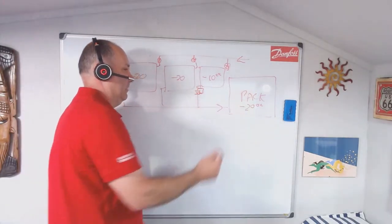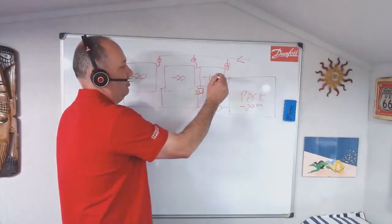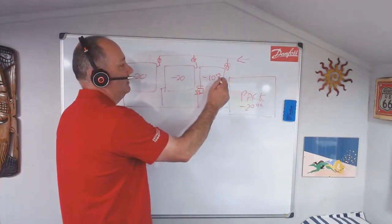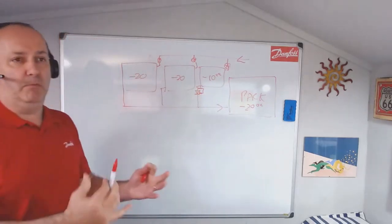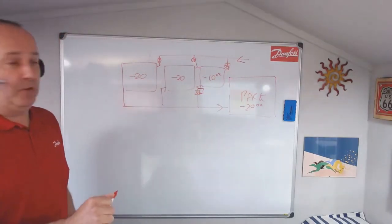So instead of pulling an awful lot back, we let this pressure build a little bit in the evaporator until we've got the right pressure for minus 10. So, yeah, relatively simple.